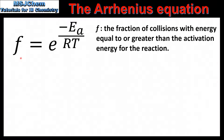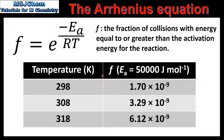Next we look at the effect of temperature on the fraction of collisions with energy equal to or greater than the activation energy, which we refer to as F. F equals E raised to the power of negative Ea over RT. In this table we have the value of F at 3 different temperatures, with the activation energy assumed to be 50,000 joules per mole. As temperature increases, so does the value of F.